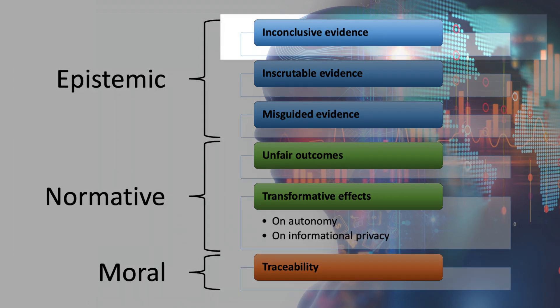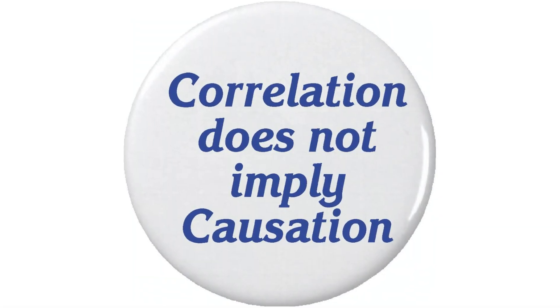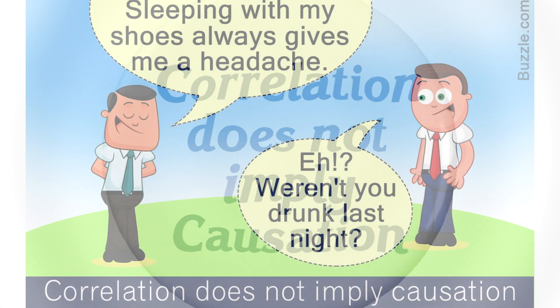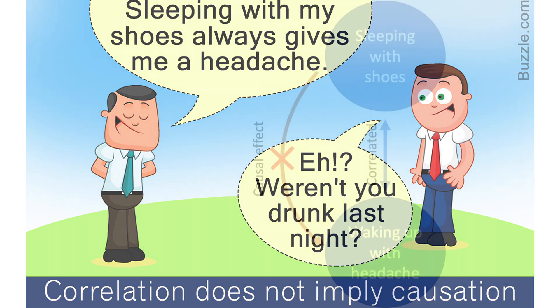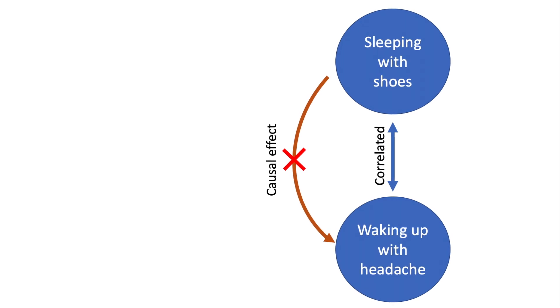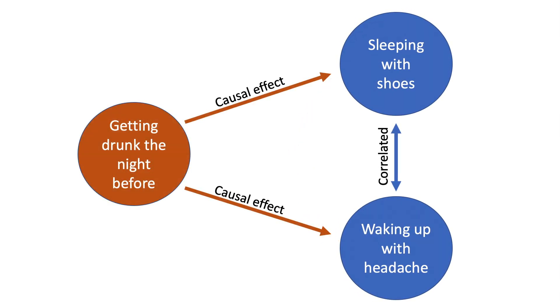The first concern comes from the fact that correlation does not imply causation. Consider this scenario: a guy found that every time he wakes up with a headache, he is still also wearing his shoes. Of course, this correlation is not enough to state that sleeping with shoes causes headaches. There must be an external factor, like the guy got drunk the night before, which is a common cause for both sleeping with shoes and having a headache. Why is this important for algorithms?